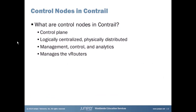The first question you might have, especially if you're new to Contrail, is: what is a control node in Contrail? Basically, it's the control plane. Contrail is a software-defined networking solution, and inside Contrail there are a few different nodes: a config node, an analytics node, a control node, and a compute node. The config node orchestrates the solution, the analytics node gathers data, the control node handles control functions, and the compute node houses the vRouter which handles forwarding. The control node is the control plane for Contrail — logically centralized but physically distributed.